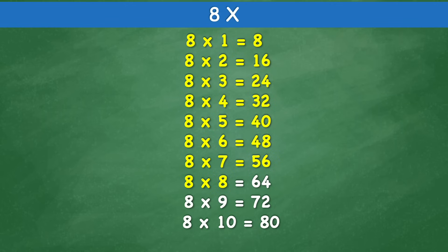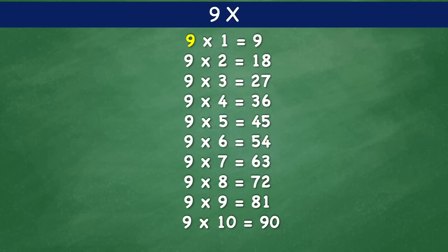8 times 8 equals 64. 8 times 9 equals 72. 8 times 10 equals 80. 9 times 1 equals 9. 9 times 2 equals 18. 9 times 3 equals 27. 9 times 4 equals 36. 9 times 5 equals 45. 9 times 6 equals 54. 9 times 7 equals 63. 9 times 8 equals 72. 9 times 9 equals 81.